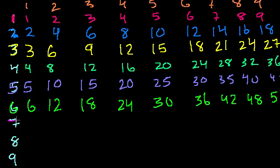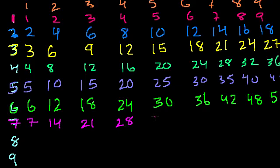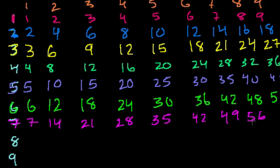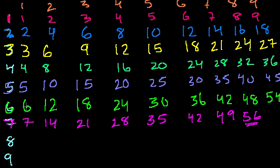7 times 1 is 7. 7 times 2 is 14. 7 times 3 is 21. 7 times 4 is 28. 7 times 5: 28 plus 7 — add 2 to get to 30, then 5 more, that's 35. 7 times 6 is 42. 7 times 7 is 49. 7 times 8 is 56. I always used to get confused between 7 times 8 being 56 and 6 times 9 being 54 — so now it's your job not to be confused. 7 times 9 is 63.